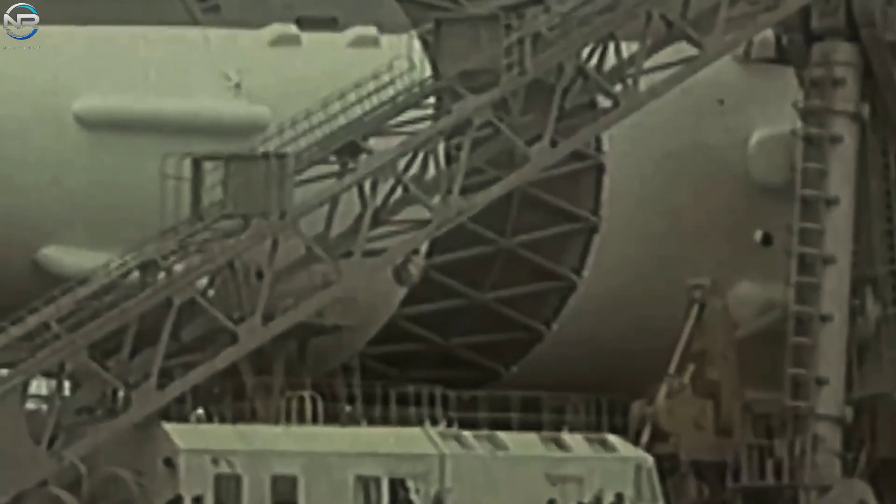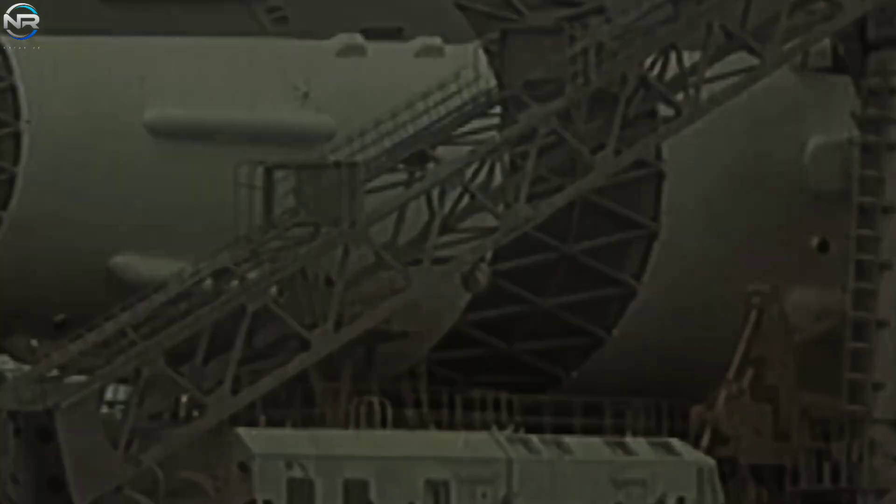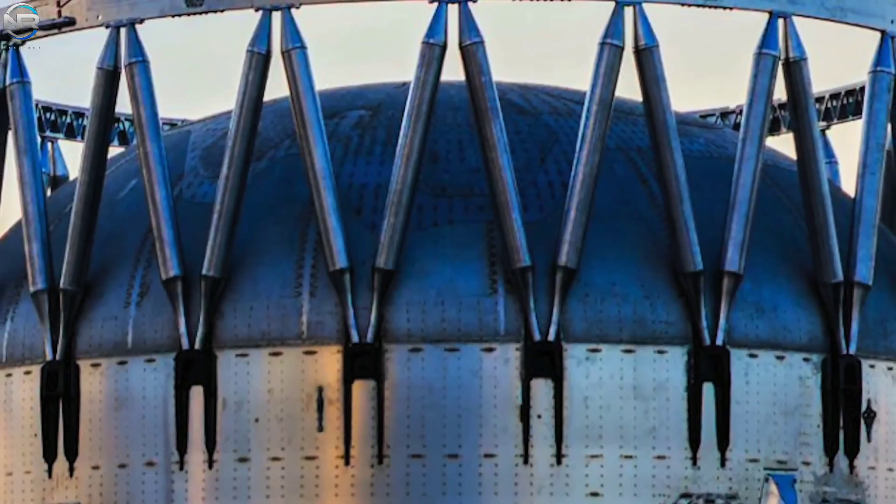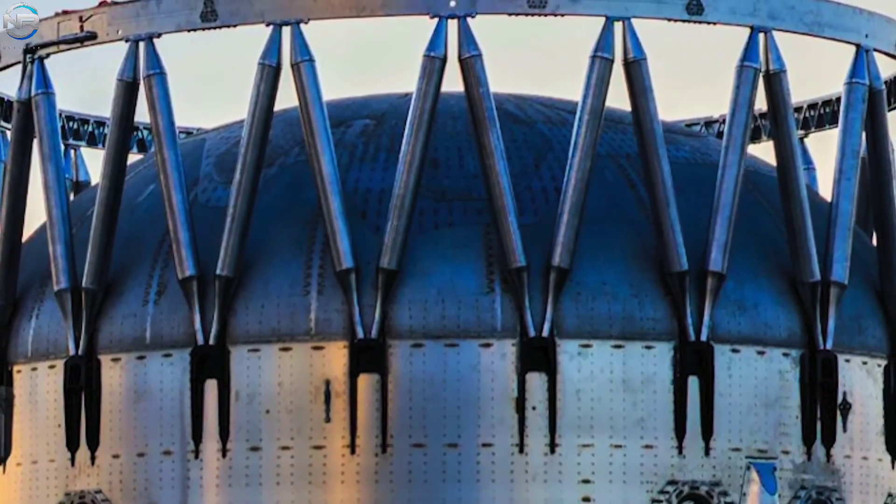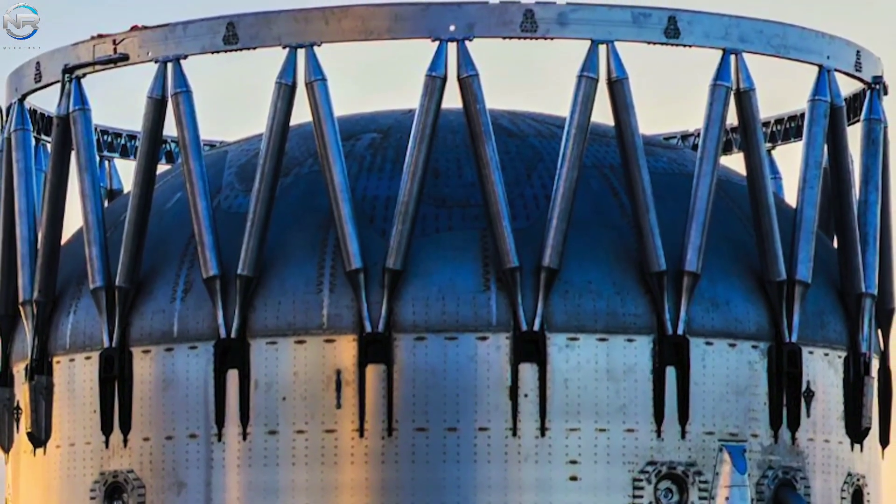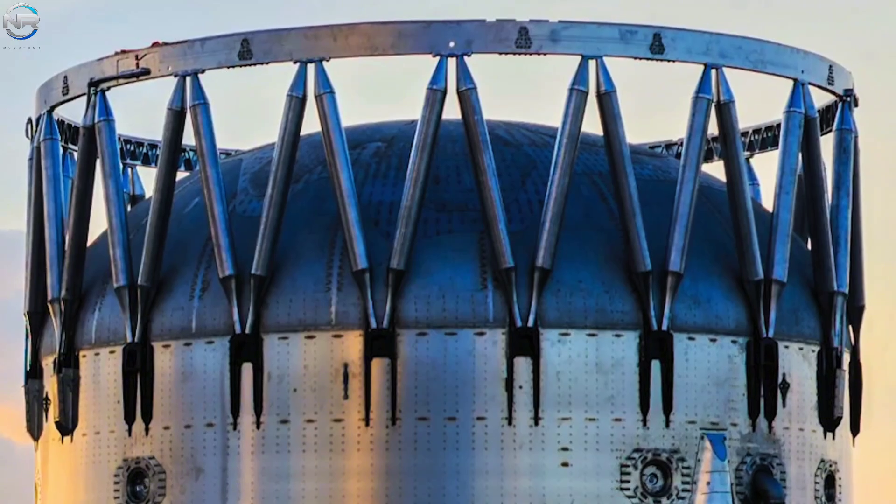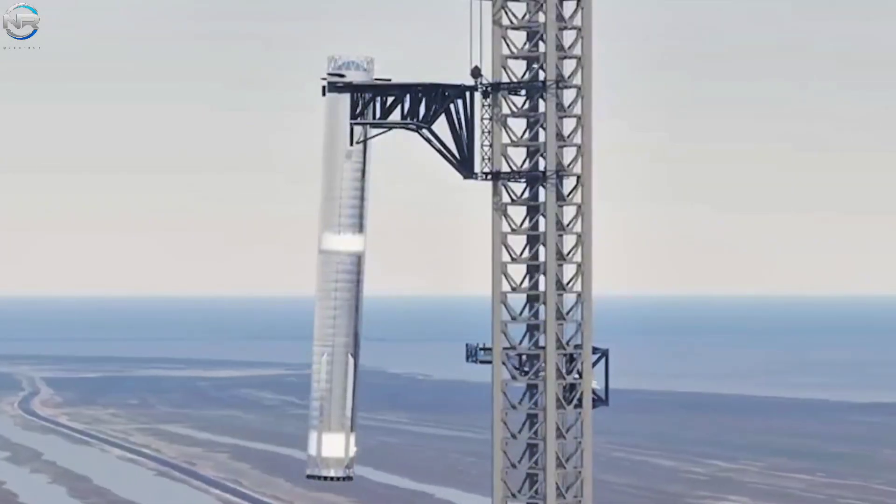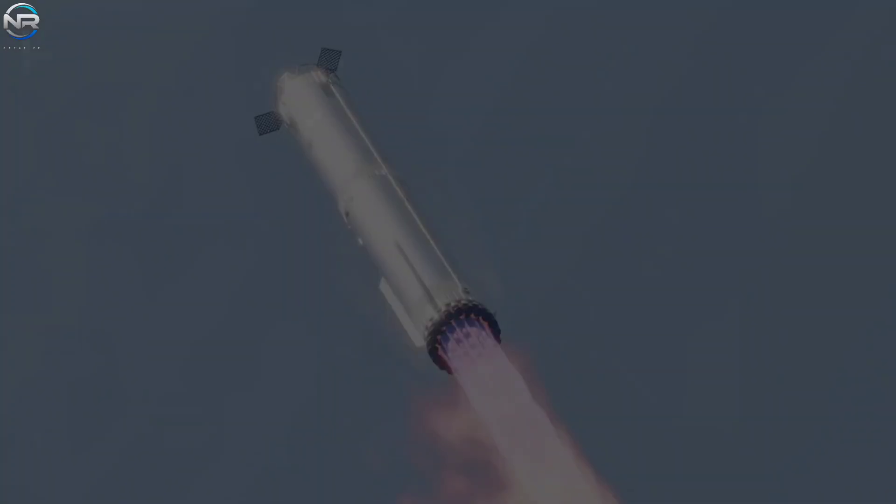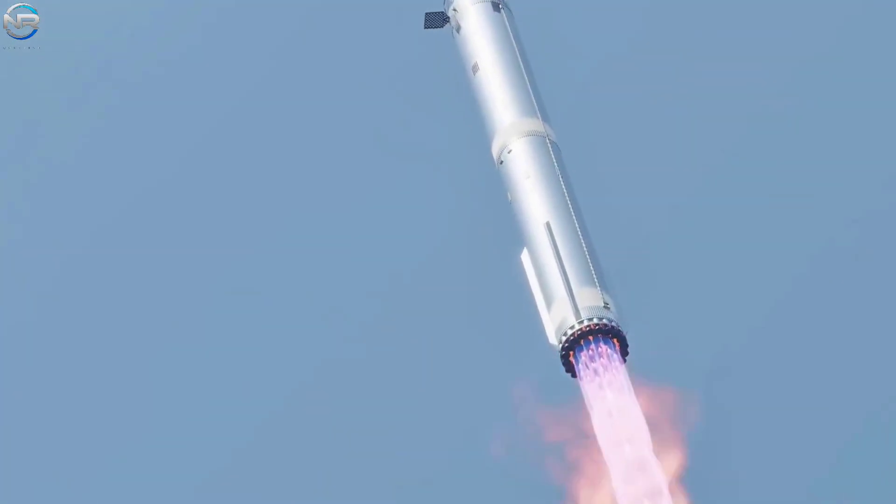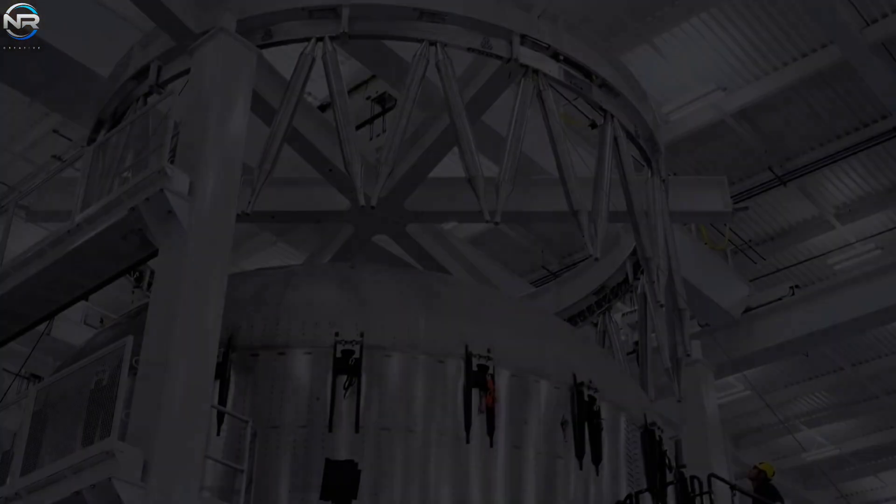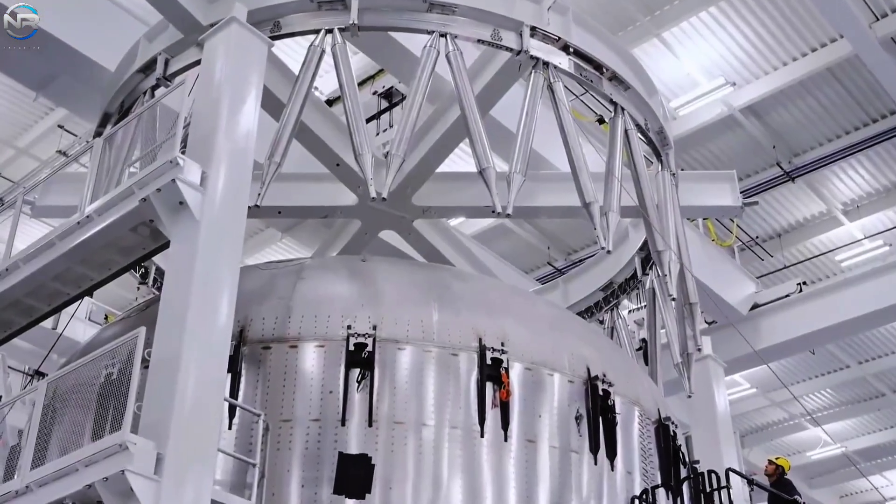This innovative design was inspired by the Soviet N-1 rocket, which also featured a type of hot staging. Despite this, SpaceX has implemented several key improvements. The most notable modification is that the hot staging segment is no longer a separate ring that separates during flight. Instead, it has been integrated directly into the booster's frame, ensuring it remains part of the vehicle throughout the entire mission, further advancing Starship's path to complete and efficient reusability.